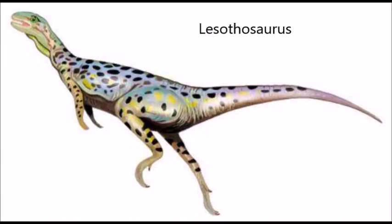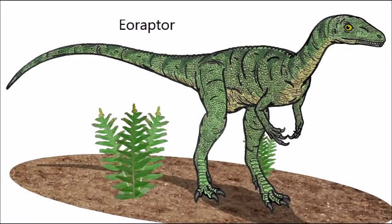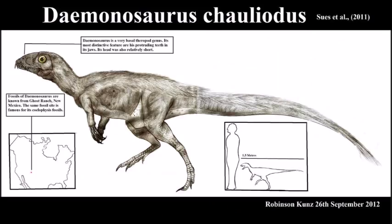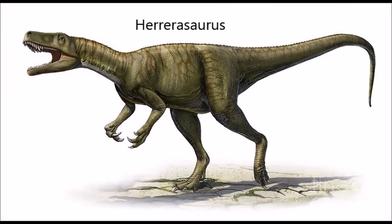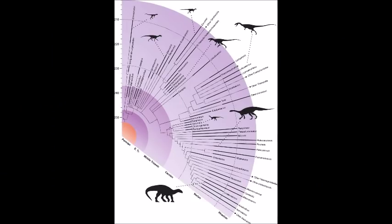Middle to late Triassic dinosaurs include herbivores such as Lesothosaurus, Eocursor, and Pisanosaurus; omnivores such as Eoraptor; and carnivores such as Daemonosaurus, Eodromaeus, Buriolestes, and Herrerasaurus. They all look very similar to each other, and you might be forgiven for mistaking them all for mere bipedal theropods — but they are not. While Daemonosaurus and Eodromaeus are considered close relatives of theropods, Lesothosaurus, Eocursor, and Pisanosaurus are actually basal ornithischians, a clade which includes Triceratops, Stegosaurus, and Iguanodon. The omnivorous Eoraptor and carnivorous Buriolestes are sauropodomorphs, and Herrerasaurus is also considered to be closely related to this lineage leading to the world's largest terrestrial herbivores.